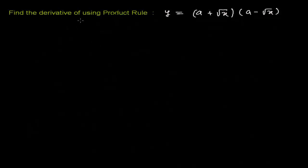Hello friends, here we have another problem of finding the derivative using the product rule. First, insert in your brain: you are not going to use any other rule. You might be thinking, oh, this is (a+b)(a-b), so it will be a squared minus b squared, and root x squared is just x, so the answer is simply -1. But sorry, you can't use it like that, because the question says to use the product rule.